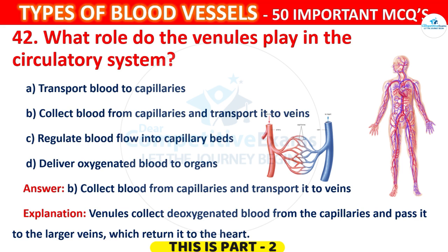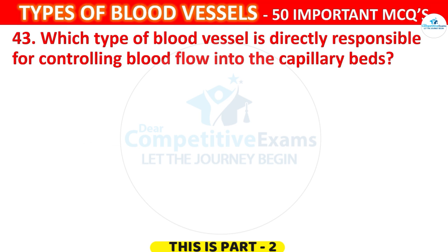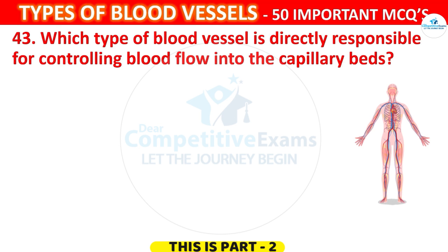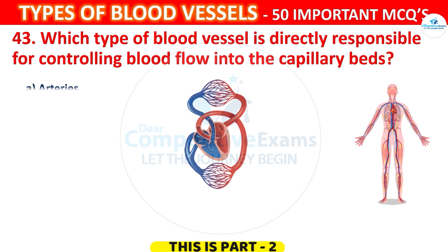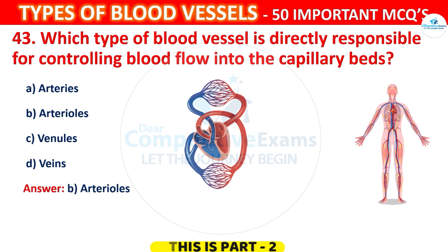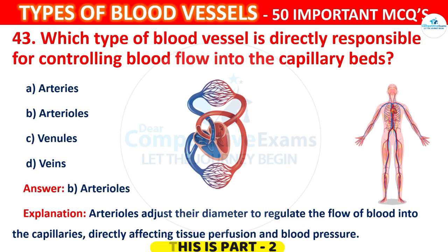Question 43. Which type of blood vessel is directly responsible for controlling blood flow into the capillary beds? Options: Arteries, Arterioles, Venules, or Veins. The correct answer is B, Arterioles. Arterioles adjust their diameter to regulate the flow of blood into the capillaries, directly affecting tissue perfusion and blood pressure.